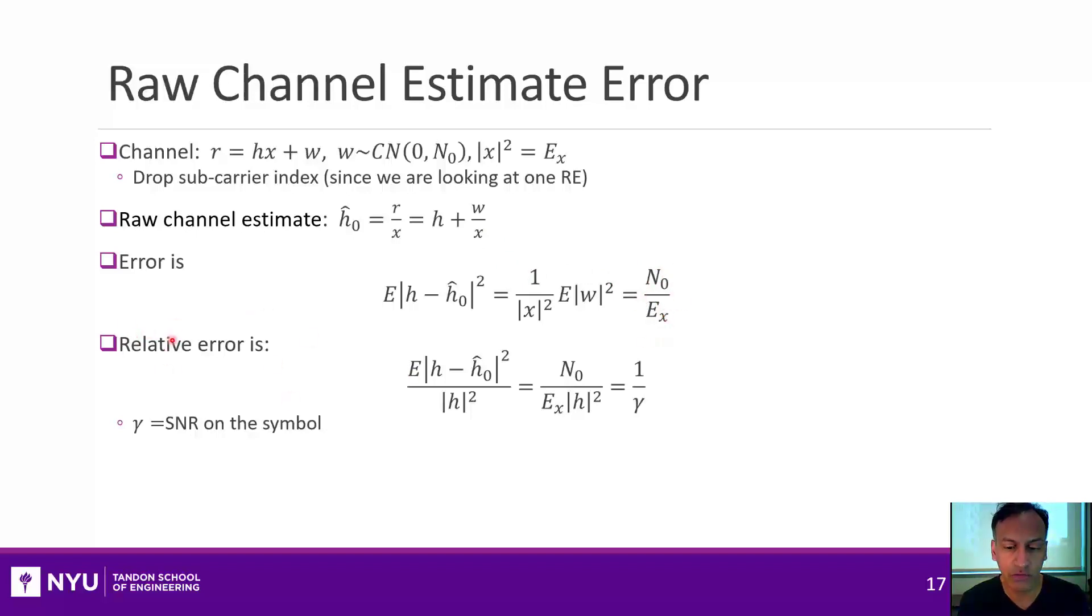And if I look at the relative error, which is I divide by the original channel, I would just get none other than one over the SNR. So that kind of makes sense. The higher the SNR you have, the lower the channel estimation error, sort of inversely related in this way.